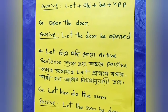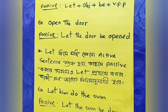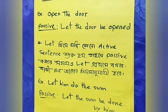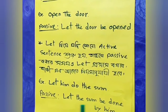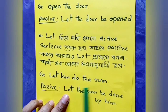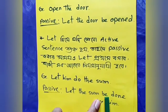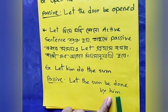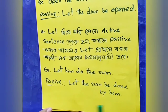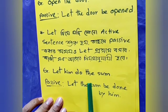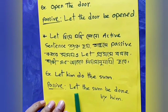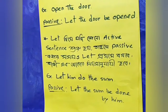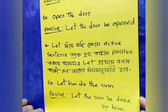Example: 'Let him do the sum.' In passive voice, this becomes: 'Let the sum be done by him.' Here, 'sum' is the object, 'be done' is 'be' plus past participle, and 'by him' uses the subject in objective form.